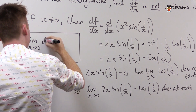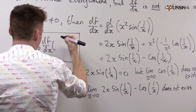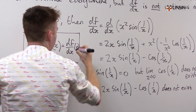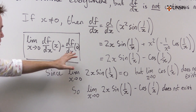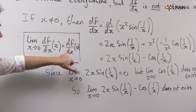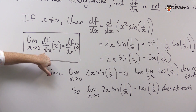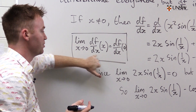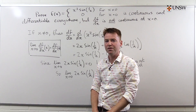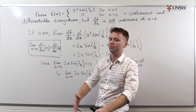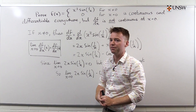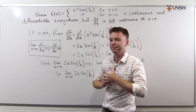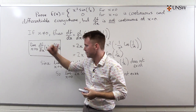For df/dx to be continuous, we would need the limit as x approaches 0 of df/dx to equal df/dx evaluated at 0. We've carefully avoided talking about what that value might be, because this limit doesn't exist. There's no value this function could possibly take that would make it continuous. So we've seen a function which is continuous everywhere and differentiable everywhere, but whose derivative is not continuous at x equals 0 and in fact cannot be made continuous at that point because this limit does not exist.